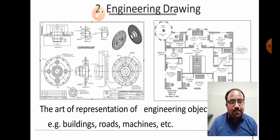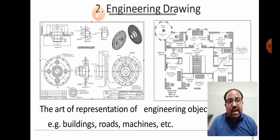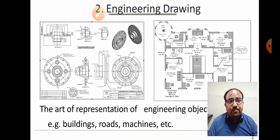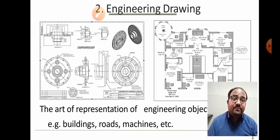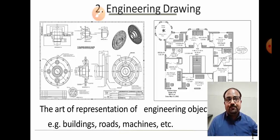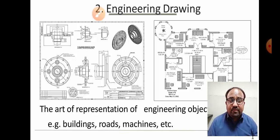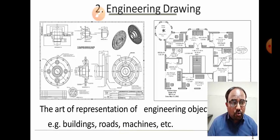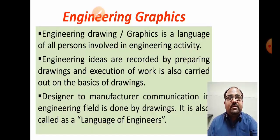What is engineering drawing? It is the art of representation of engineering objects — any type of graphical section represented on paper with actual size, actual shape, features, and dimensions. Engineering drawing is described on paper with dimensions. Examples include a building, a road, a machine structure, etc.